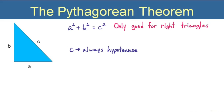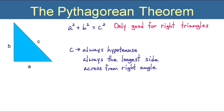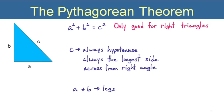And c always has to be the hypotenuse side. The hypotenuse, of course, is across from the right angle, and it is the longest side because it's across from the biggest angle. So there's c. The other two sides, a and b, are what we call legs, and they are interchangeable. It really does not matter which one you label with which letter.